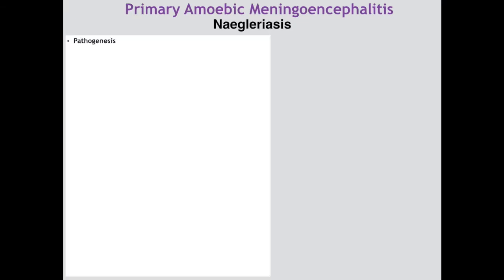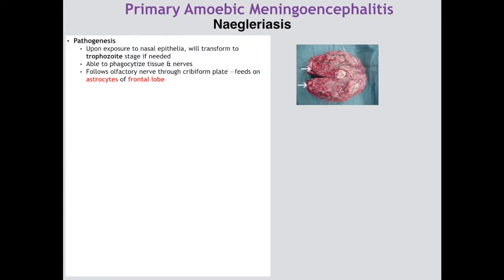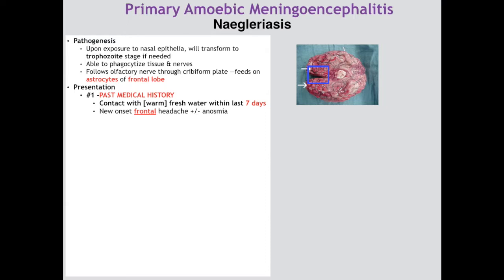Primary amoebic meningoencephalitis (PAM), aka Naegleriasis: upon nasal exposure, she transforms to her trophozoite form, follows the olfactory nerve through the cribriform plate to the frontal lobe, and feeds on astrocytes. Clinical presentation differs significantly from the first two. The most important clue is the patient's history of contact with warm fresh water within the last seven days — without knowing this, you will not think of Naegleria. The patient will complain of new-onset frontal headache with or without anosmia (because she has eaten the olfactory nerve), potentially appearing as quickly as one day after exposure. Symptoms rapidly progress to the meningitis triad: nuchal rigidity, photophobia, and fever.